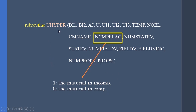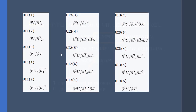The advantage of the U-Hyper subroutine compared to the U-mat subroutine for a hyper-elastic material is that here we don't have to define the DDSDDE matrix or the stress components — Abaqus does them all. UI1, UI2, UI3, etc. are formulated like the following relations, which you can find in the Abaqus documentation. Note that we don't have to define all of these terms; it depends on our density function. For example, if we just want to model our material using the Neo-Hookean model, we only have to define the parts which are dependent on Ī₁.